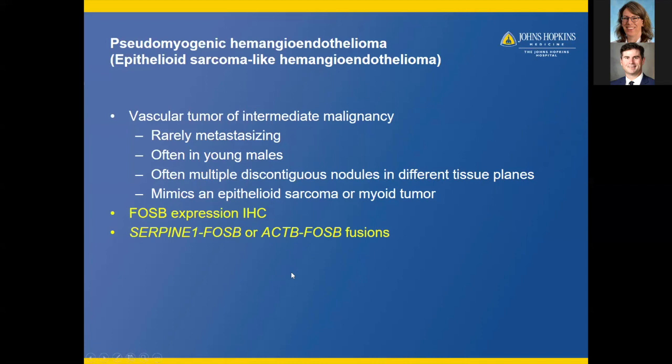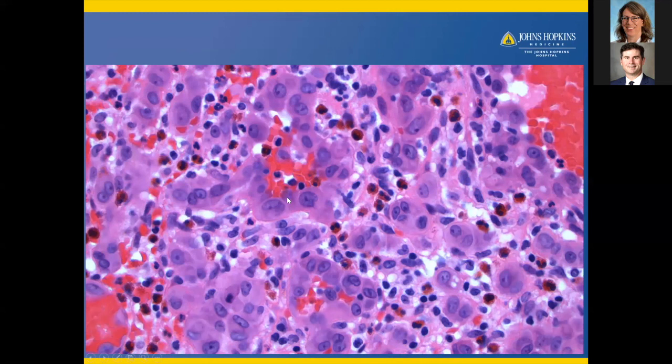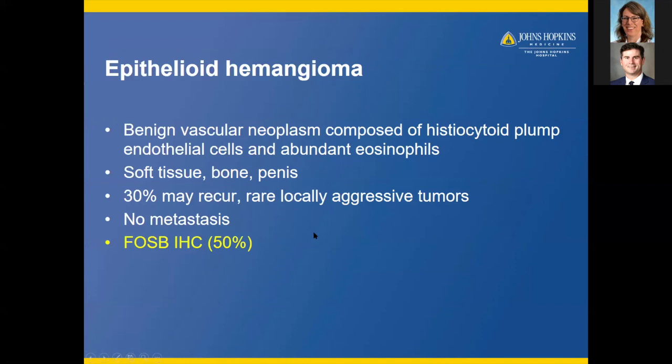Here is another tumor with histiocytoid endothelial cells and admixed eosinophils. This is an epithelioid hemangioma — a benign vascular neoplasm generally seen in soft tissues and bone, frequently occurring in the penis. 30% may recur. It is rarely locally aggressive and does not metastasize. This also has recently been found to have FOSB expression via IHC.